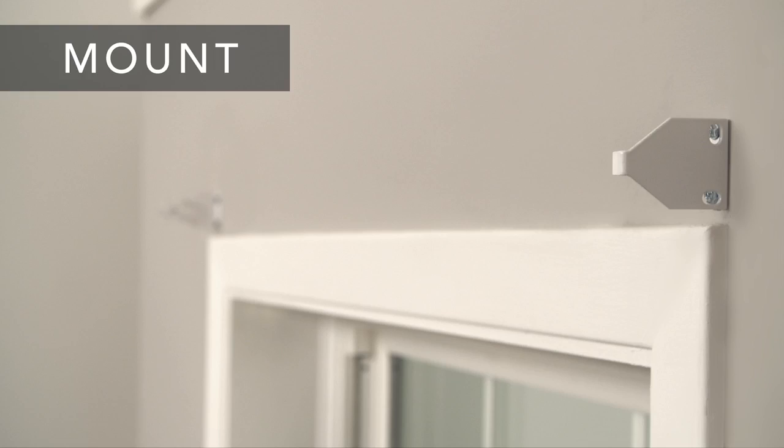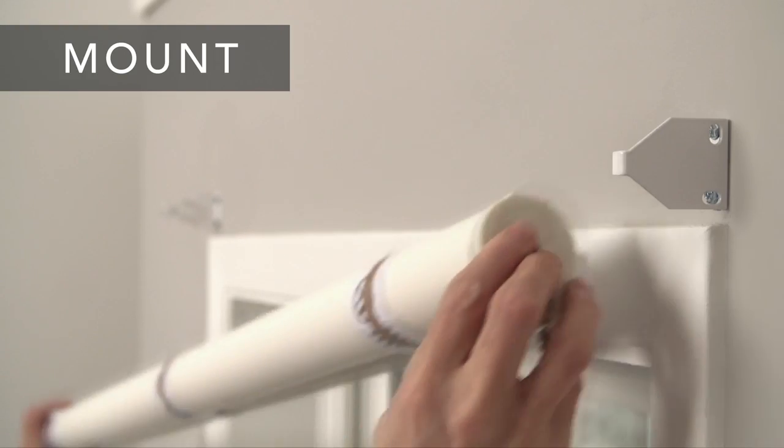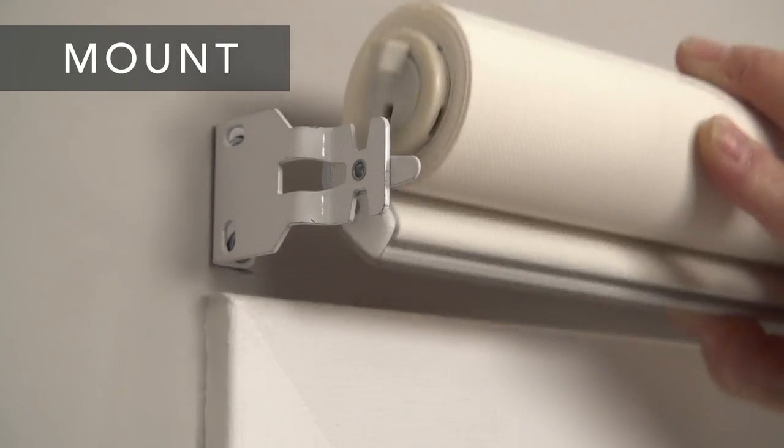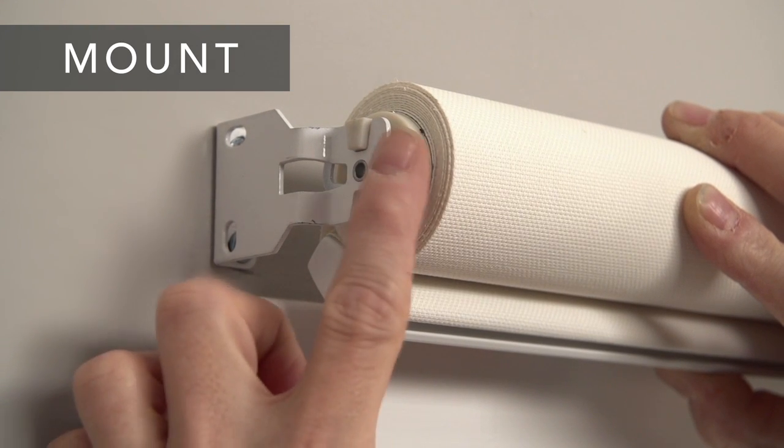Now you're ready to mount your shade. Insert the tip of the idle end bracket into the idle end of the shade. And then slide the clutch end of the shade into the clutch end bracket and close the latch.